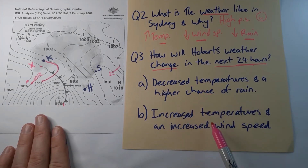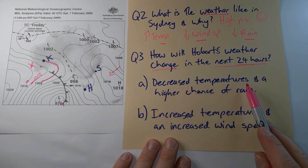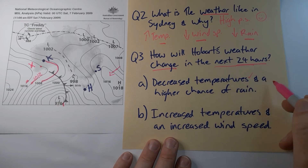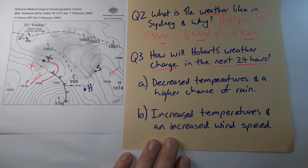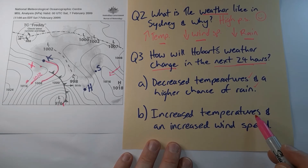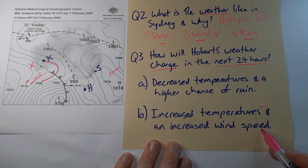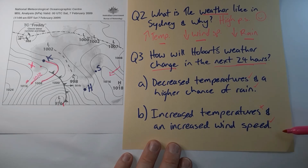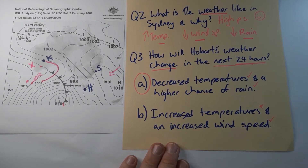Checking the options: Option A says decrease in temperature and higher chance of rain — that sounds like lousy conditions. Option B suggests it'll get warmer, which doesn't sound right for a cold front and low, though increased wind speed does fit. Overall, option A is the most correct answer. And that's the quick cheat's guide to reading a synoptic chart.